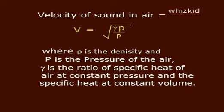Velocity of sound in air is equal to V equals square root of gamma P by rho, where small rho is the density and capital P is the pressure of the air. Gamma is the ratio of specific heat of air at constant pressure and specific heat at constant volume.